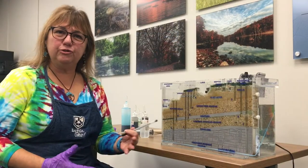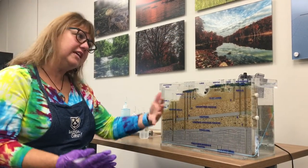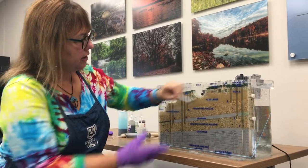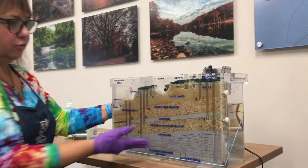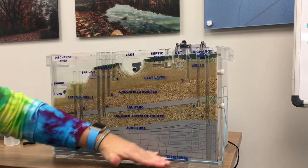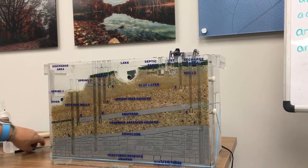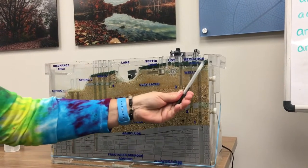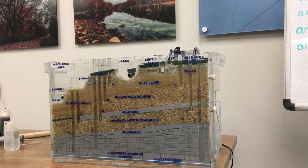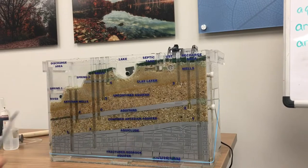The first thing I want to do is show you the different parts of my model so you can see what I'm talking about. This area, the front of the model, represents underground — all of this space is underground. Up here you'll see green — actually they're kitchen scrubbies. These green scrubbies represent vegetation on the surface.